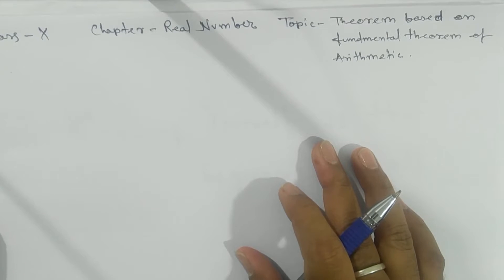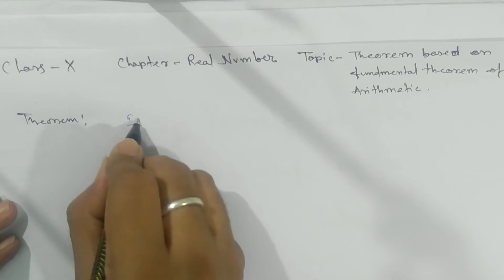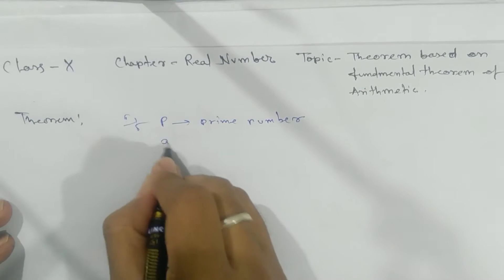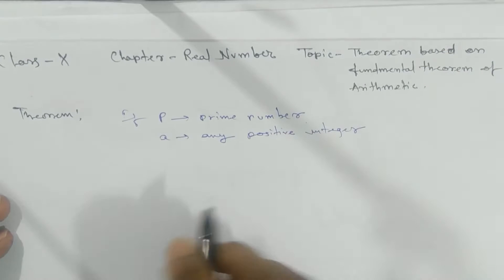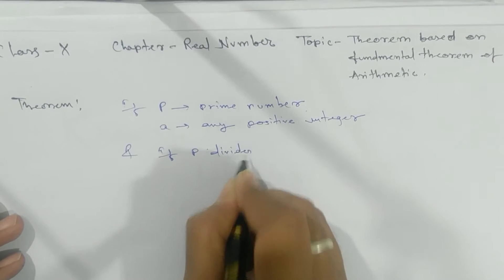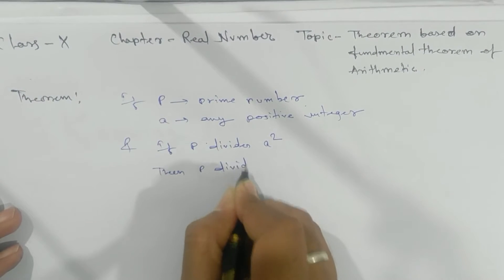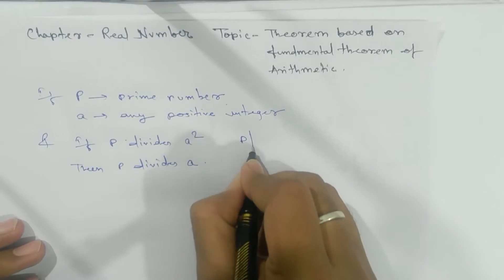Namaste students. Today's topic is a theorem based on the Fundamental Theorem of Arithmetic. The theorem says: if P is a prime number, and a is any positive integer, and if P divides a squared, then P divides a also.